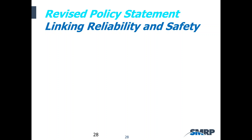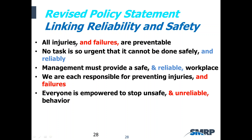Here is a revised policy statement that links reliability and safety: all injuries and failures are preventable; no task is so urgent it cannot be done safely and reliably; management must provide a safe and reliable workplace; we are each responsible for preventing injuries and failures; and everyone is empowered to stop unsafe and unreliable behavior. This model ties together reliability and safety, particularly given the data I've just shared.